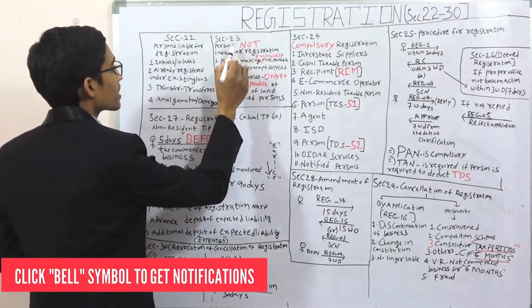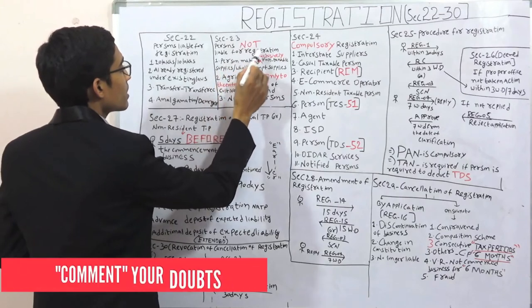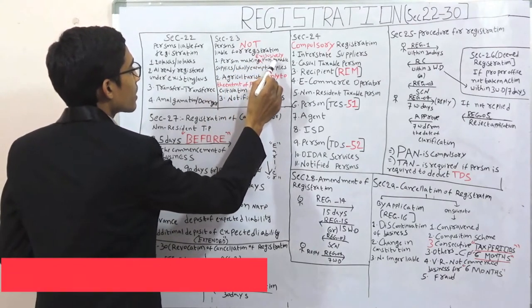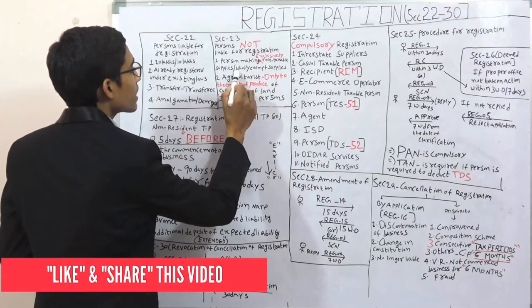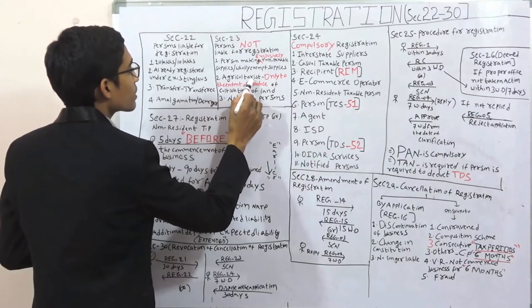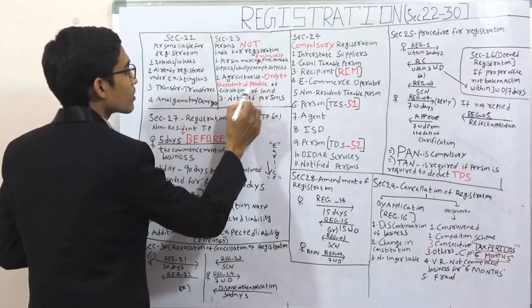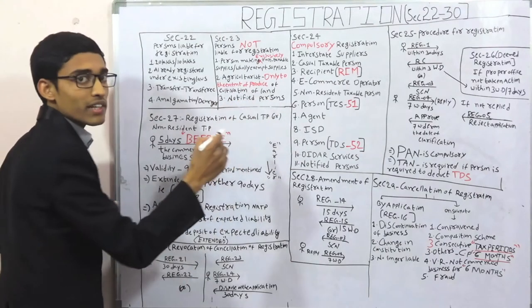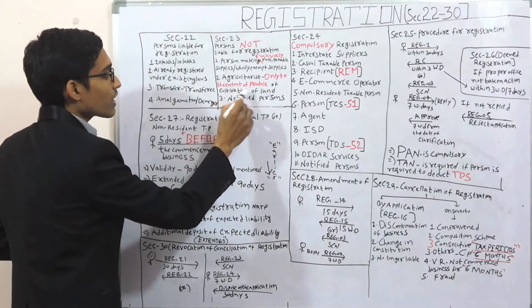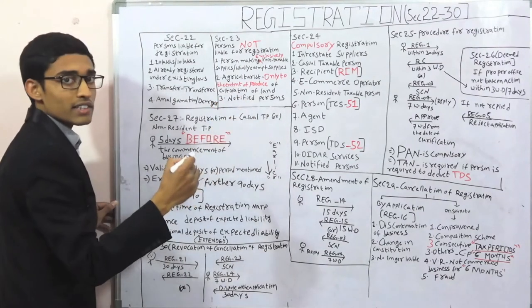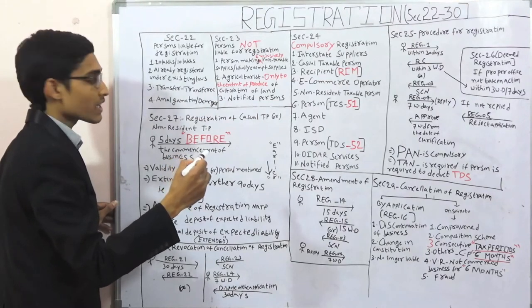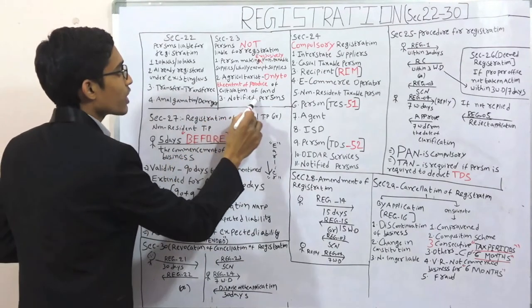Section number 23 — persons not liable for registration. One: person making exclusively non-taxable supplies or wholly exempt supplies. Two: agriculturalist, only to the extent of produce from cultivation of land. If an agriculturalist makes supplies other than cultivation of land and such supplies exceed 20 lakhs, then he has to take registration. Three: notified persons.